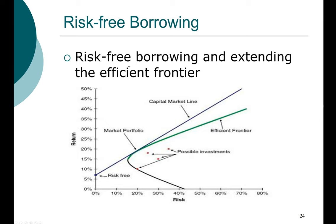This is an important assumption — somewhat unrealistic, but it doesn't change the final results very significantly. Most of us cannot borrow and lend at the same rate; when we borrow we typically pay a slightly higher interest rate than what we get investing in a bank. However, for very large institutional investors such as banks, these rates come very close. If the rates are not the same, we will have a slight kink in this line, but it doesn't change the overall results significantly. To keep our analysis simple, we make this simplifying assumption.